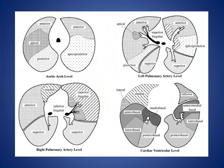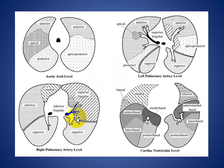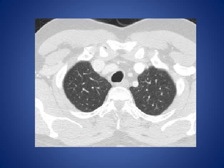To localize segments on the CT scan, we use five levels: Level 1 is above the aortic arch, Level 2 is at the aortic arch, Level 3 is at the left pulmonary artery, Level 4 is at the right pulmonary artery, and the last level is at the level of the heart or ventricles.